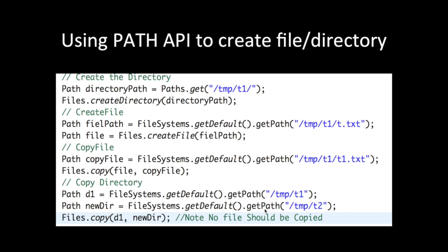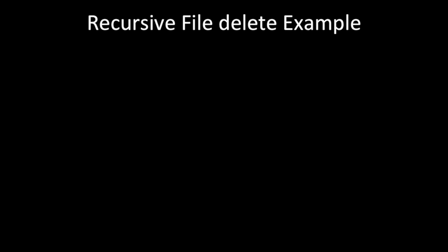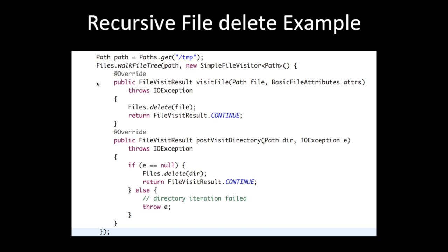The Path API also offers recursive operations using walkFileTree. There are two overridden walkFileTree methods. This method walks a file tree rooted at a given starting file — similar to a DFS (depth-first search) operation — and throws IOException. This is used when we want to delete files recursively or perform operations on a file system.